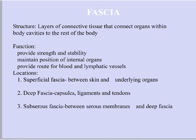Let's move on now to a different type of connective tissue — fascia. Fascia is layers of connective tissue that connect organs within body cavities to the rest of the body, so it's connective tissue that's connecting everything to everything else. Just like other connective tissues, it provides strength and stability, and helps maintain the position of your internal organs inside your body. It ensures those internal organs are either suspended or anchored in place and not falling down and jiggling around inside your body cavities. Fascia also provides anchorage and a route for blood vessels and lymphatic vessels.